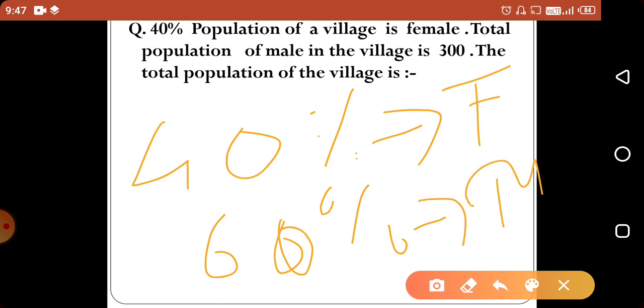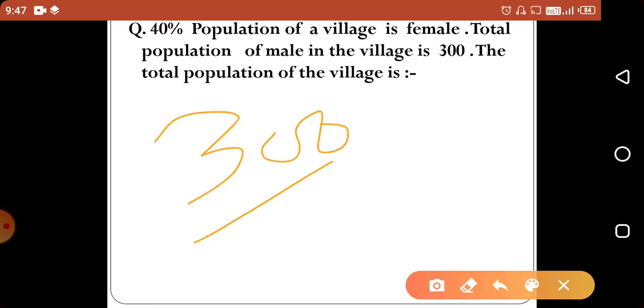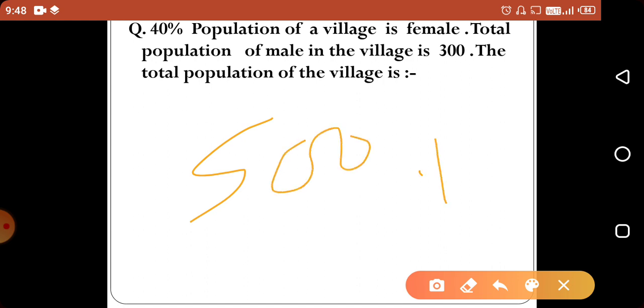60% of the value is 300. To find the total population, if 60% equals 300, then 100% will be 500. The total population of the village is 500.